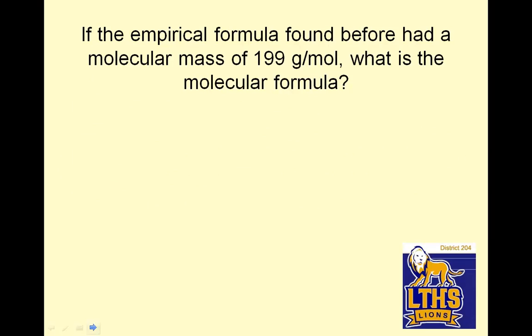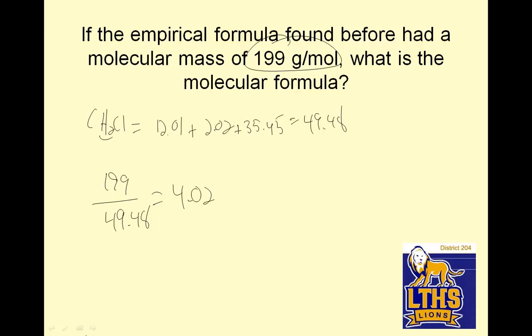So, if the empirical formula found before had a molecular mass of 199, what is the molecular formula? It was CH2Cl. So, what I'm going to do is go to the periodic table. So, 12.01 plus 2.02, I doubled it, plus 35.45. All of those numbers came from the periodic table. And, I have 12.01 plus 2.02 plus 35.45 and it's 49.48. So, what I'm going to do is take this number they gave me, 199, and divided it by 49.48 and I should get really close to a whole number. And, I get 4.02 and just call that 4. So, what that means is my multiplier is 4. Therefore, I have C4H8Cl4 for my real formula.